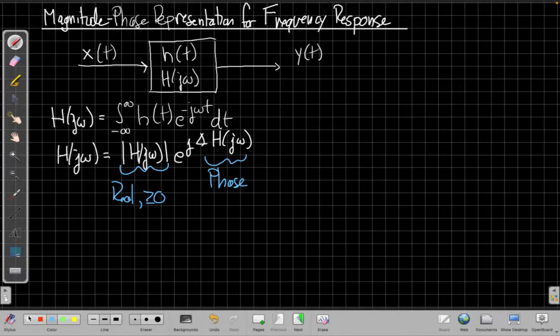And then we have e to the j and this is the phase of h up here. We can write down the equations for how we get those. The magnitude is just based on the squares of the real and imaginary parts.